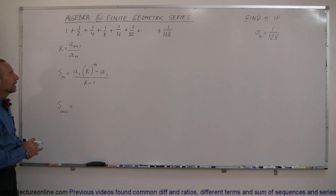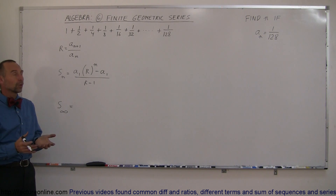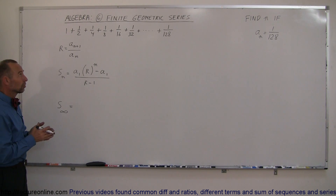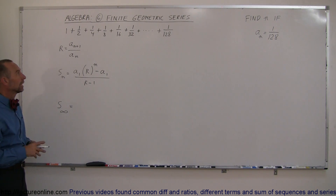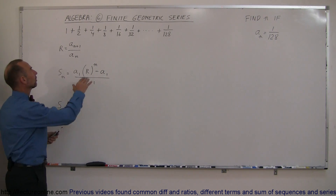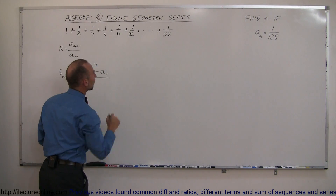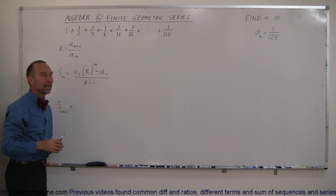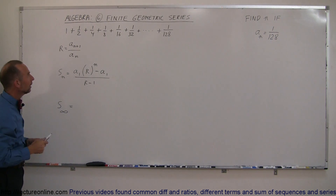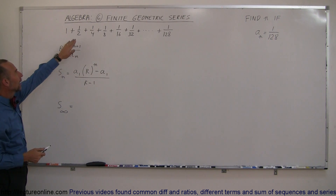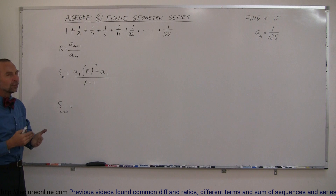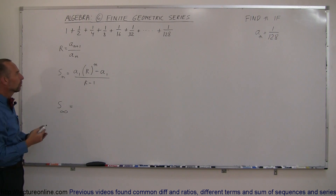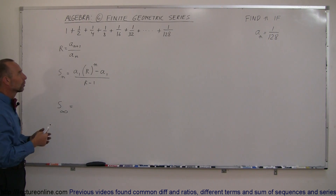Welcome to our lecture online. Here we're going to look at something very special when we deal with geometric series — the finite geometric series. We have a series that declines in size as we go on, starting with 1, then one-half, one-fourth. We know it's a geometric series because we're going to find the common ratio.